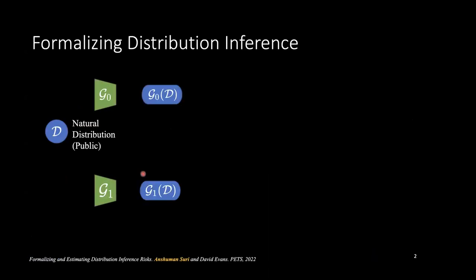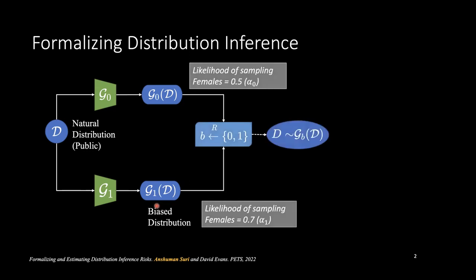So, distribution inference, if you try to formalize it, the formalization is inspired a lot by Yom et al's game for membership inference. You start with some natural distribution that's supposed to be public, and you have these two possible scenarios which you can use to transform the distribution. You could have one distribution that's completely unbiased, and the other one is biased in some particular attribute or property. As a concrete example, maybe the first one produces a distribution where there's an equal likelihood of sampling males or females, and the second one is biased by some ratio alpha in the sense that alpha zero would mean no females, alpha one would mean all females.